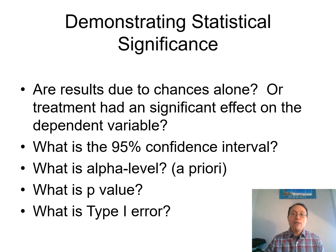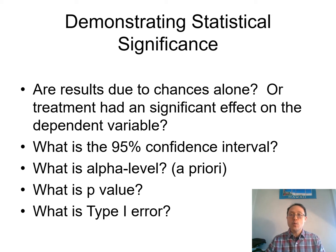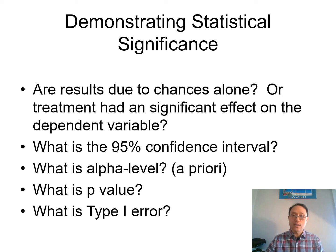The alpha level, p-value, and type 1 error are things you should have learned in statistics. If you're not sure what they are, you can look them up in the stats textbook. I'm not going to go over this at this point.